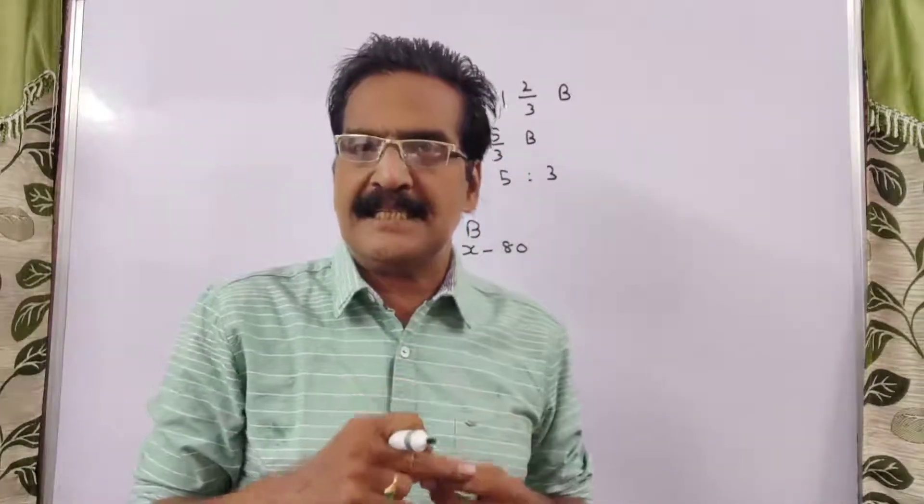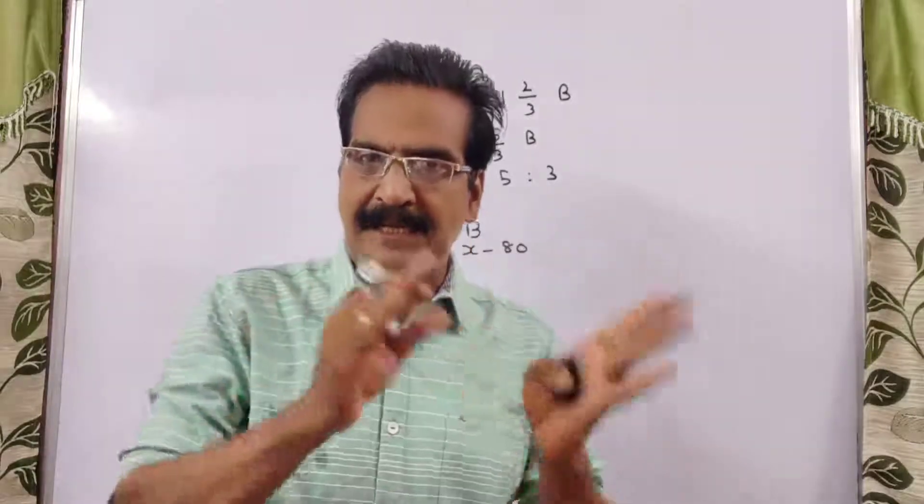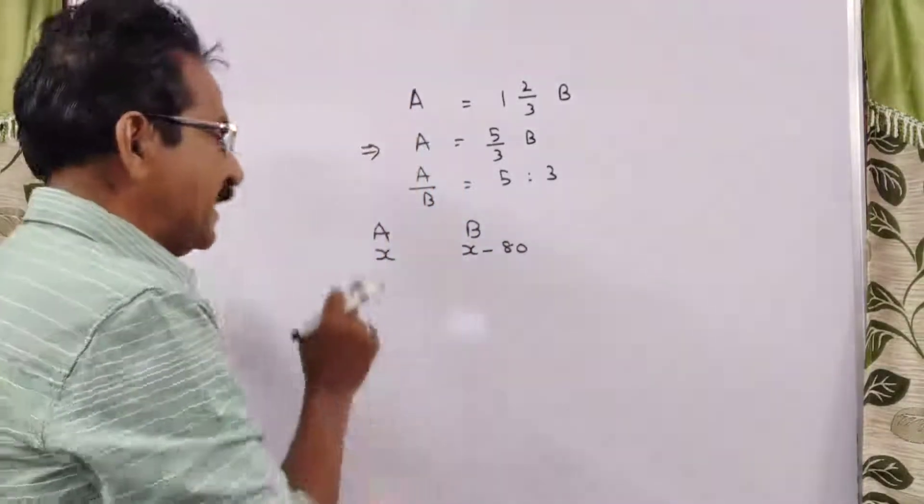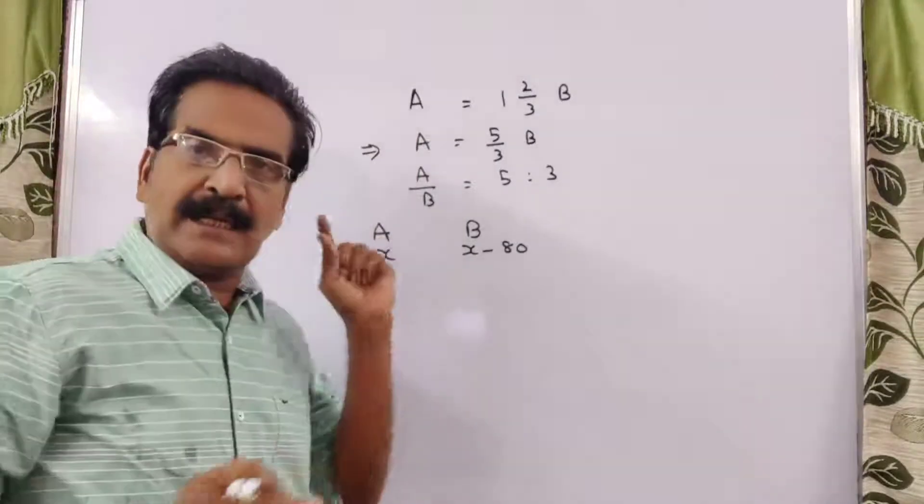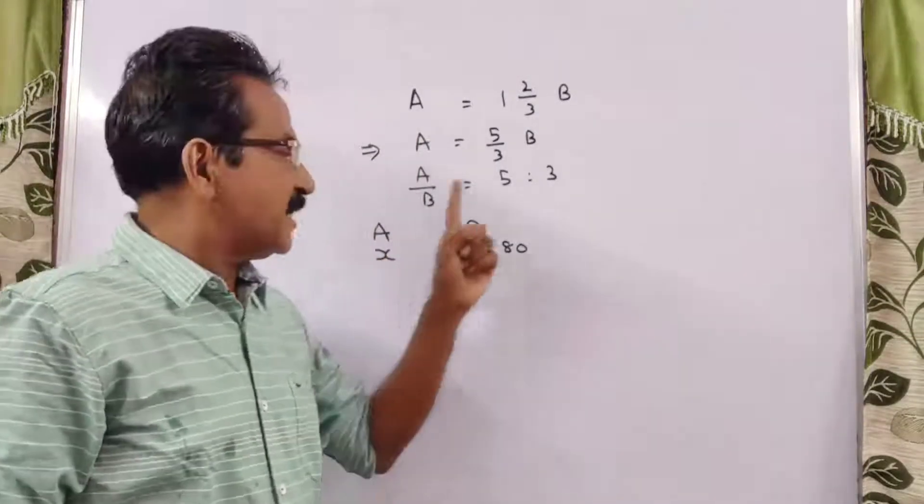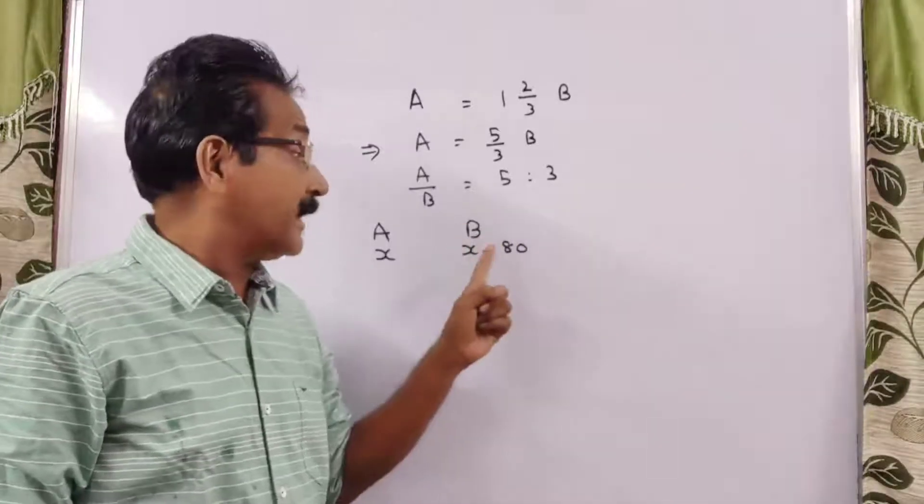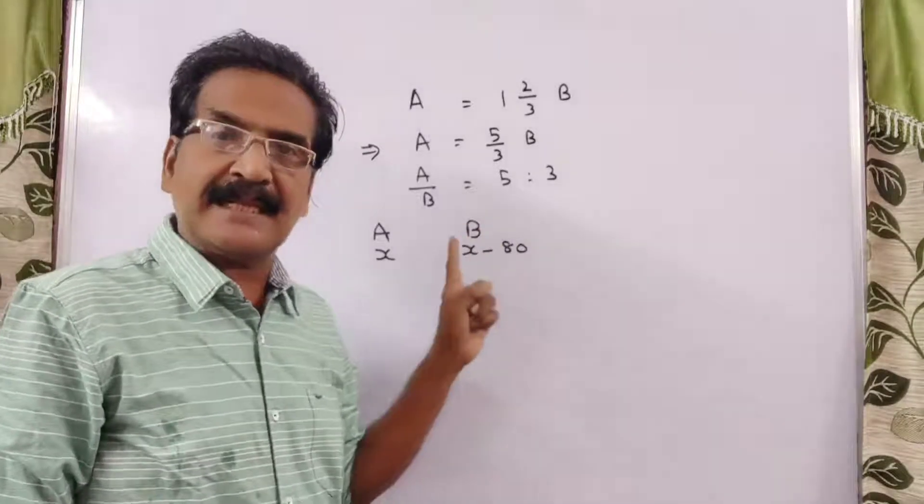So, A and B reach at the same time means the time taken by A is equal to time taken by B. Time taken by A to run x meters is equal to time taken by B to run x minus 80 meters.